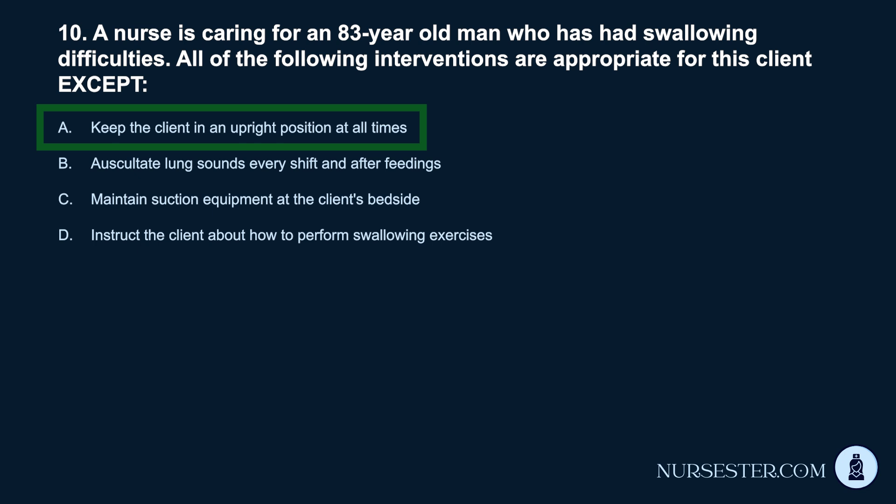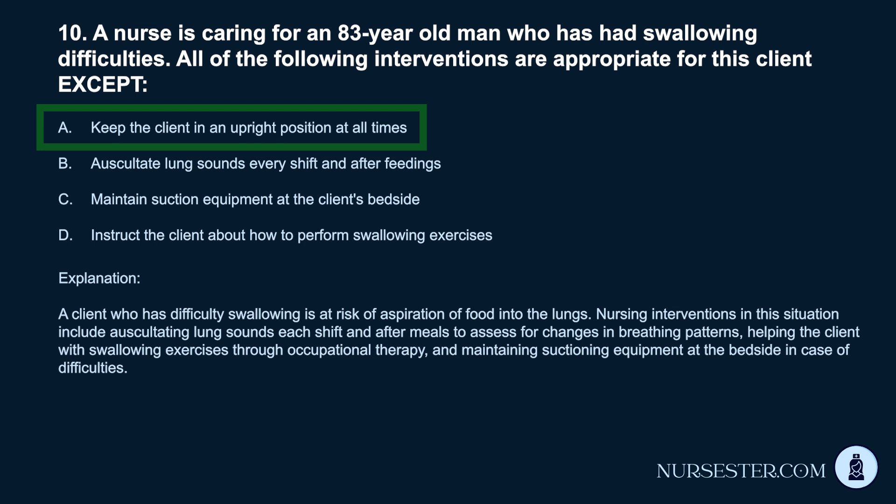Correct answer: A. Keep the client in an upright position at all times. A client who has difficulty swallowing is at risk of aspiration of food into the lungs. Nursing interventions include auscultating lung sounds each shift and after meals to assess for changes in breathing patterns, helping the client with swallowing exercises through occupational therapy, and maintaining suctioning equipment at the bedside in case of difficulties.